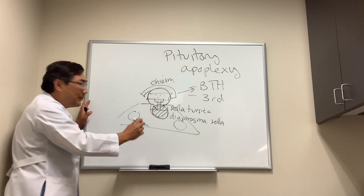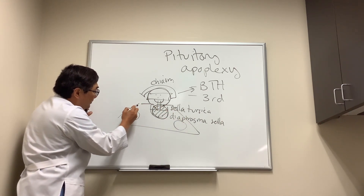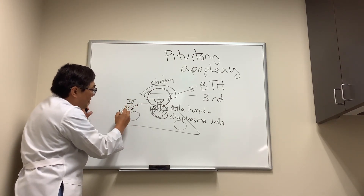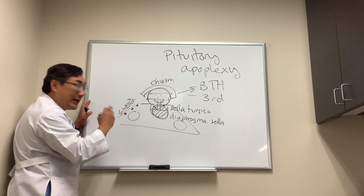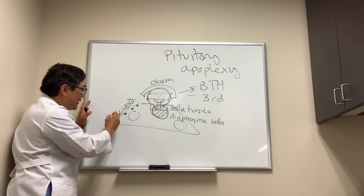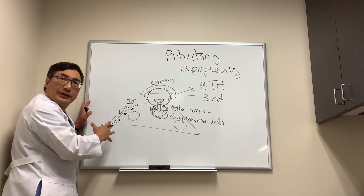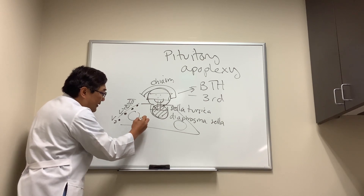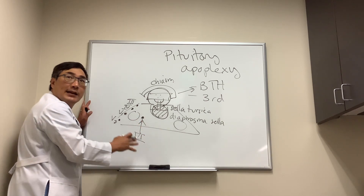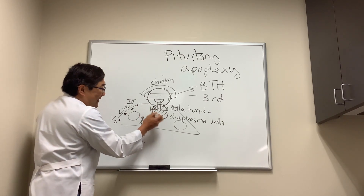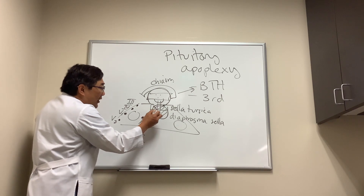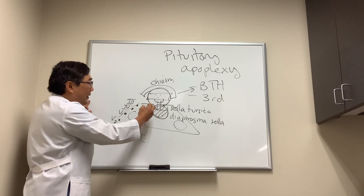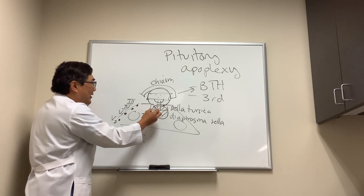The cranial nerves are numbered three, four, and five subdivision one in the anterior portion of the cavernous sinus, and five subdivision two in the posterior portion. But the sixth nerve lives in the substance of the cavernous sinus itself.